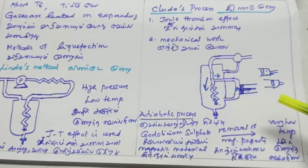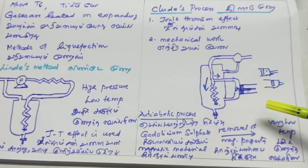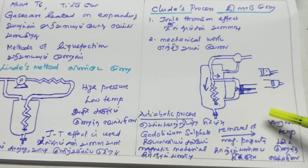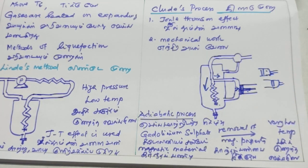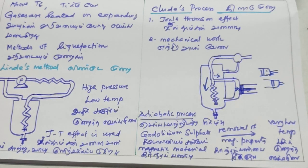A Gadolinium sulfate compound is used. It is magnetic in nature. In the adiabatic process, the magnetic property is removed — the compound should be deprived of its magnetic property immediately. This adiabatic demagnetization process can reach temperatures approaching zero Kelvin. Negative Kelvin temperature is not possible, but by achieving that low temperature, we can liquefy gas.